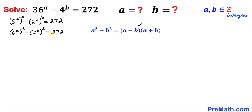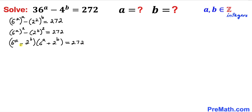Now let's recall the famous identity a² minus b² equals (a minus b)(a plus b). Applying it to the left-hand side, we get (6^a minus 2^b)(6^a plus 2^b) equals 272. The first factor is the difference of the two numbers — the smaller one — and the second factor is the sum — the larger one. Both factors are going to be even numbers.